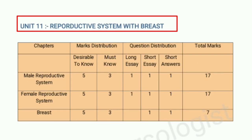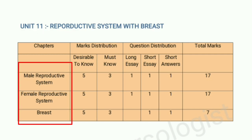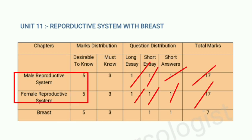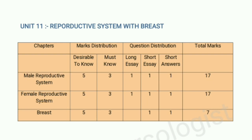Our last unit is the reproductive system, which has three chapters: male reproductive system, female reproductive system, and breast. Both the male and female reproductive system chapters each carry 17 marks — 1 question for 10 marks, 1 question for 5 marks, and 1 question for 2 marks.